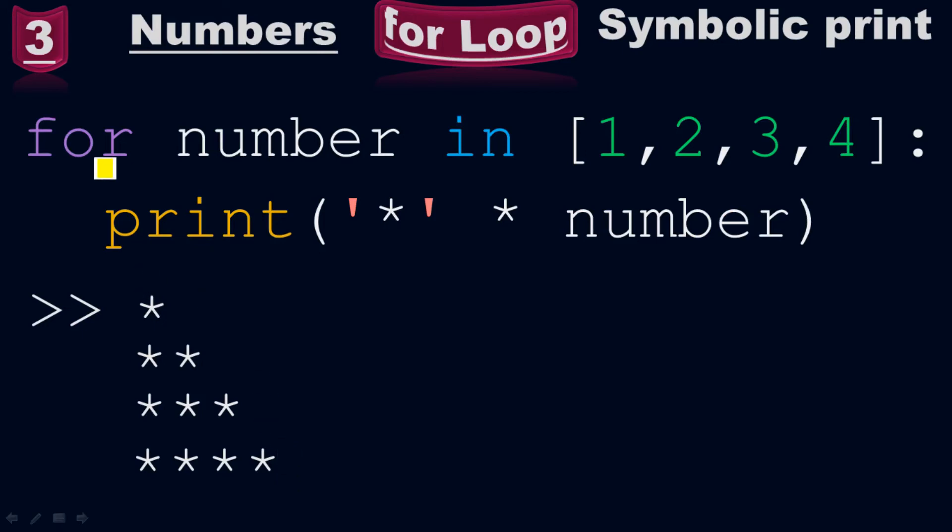If you put asterisks you will see asterisks all the way. If you put X you will see X all the way. If you put A you will see A all the way. It depends on the number. First is 1 you will see 1 asterisk, second number is 2 you will see 2 asterisks, third number is 3 you will see 3 asterisks, fourth number is 4 you will see 4 asterisks.